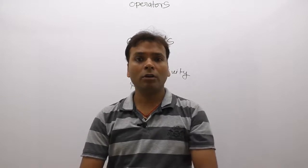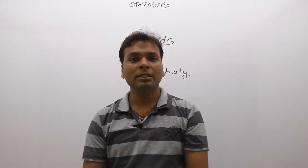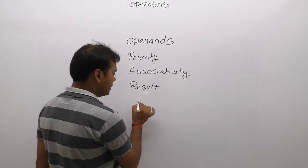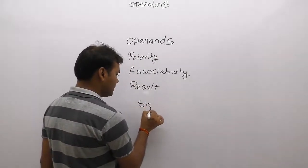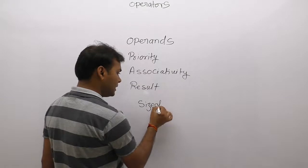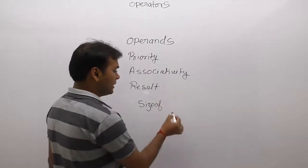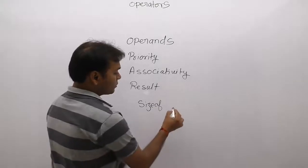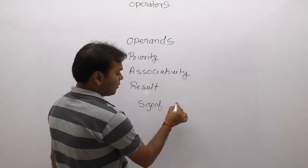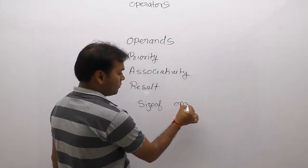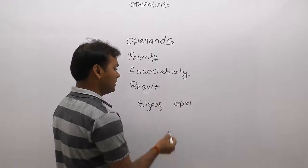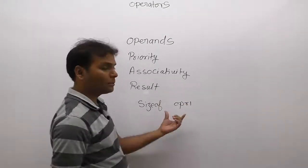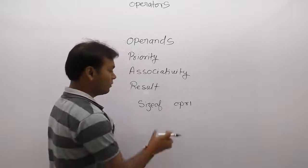But some operators can be represented by using keywords — like 'sizeof'. sizeof is not a symbolic notation, still this entity is considered as an operator because it takes only one argument or one operand, and it also follows priority rules. It is in the unary operators list and also follows associativity.